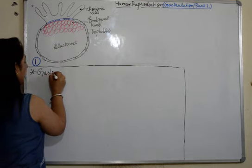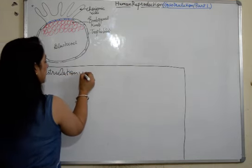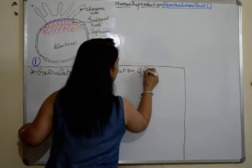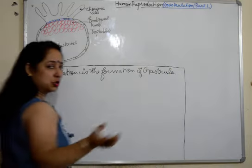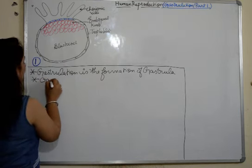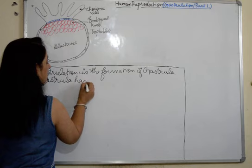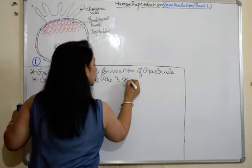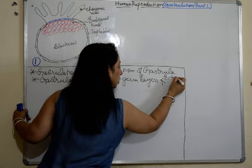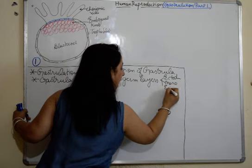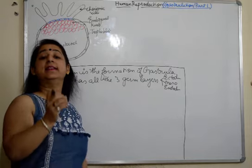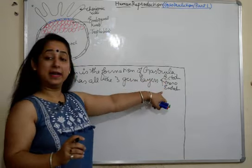Gastrulation is the formation of gastrula from a blastula. The significant characteristic feature of gastrula is that it has all three germ layers: ectoderm, mesoderm, and endoderm. Throughout the process of gastrulation we will discuss how these three layers are formed — first ectoderm, then mesoderm, then endoderm.